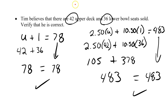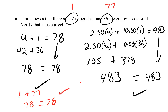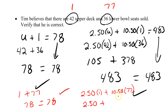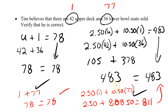What if Tim had said 1 upper deck and 77 lower bowl? Then 1 plus 77 equals 78 — that checks out on equation one. But on equation two: 2.50 times 1 plus 10.50 times 77 gives 2.50 plus 808.50, which equals $811. That does not equal 483. So you can see the only values that satisfy both equations are 42 and 36.